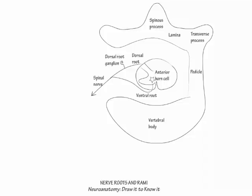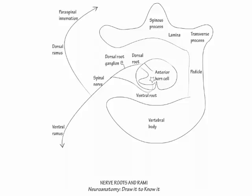Next, just distal to the intervertebral foramen, show the anterior and posterior roots joined to form a spinal nerve, which then separates into dorsal and ventral rami. The dorsal rami innervate the paraspinal muscles and provide sensory coverage to the back of the head and posterior trunk, whereas the ventral rami provide motor and sensory innervation to a far more widespread group of muscles and sensory areas, including the anterior trunk and upper and lower limbs.